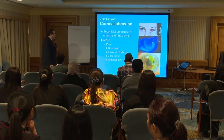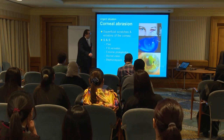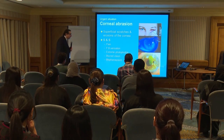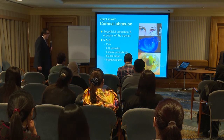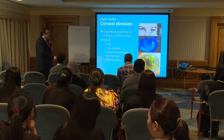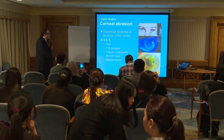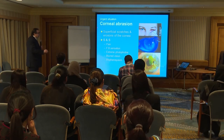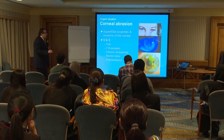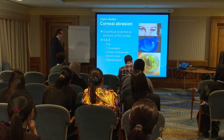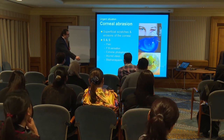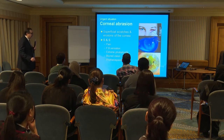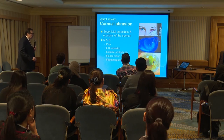Most doctors use fluorescein and the cobalt blue filter of the slit lamp to find foreign bodies. Corneal abrasions are also detected this way, as some are very small. Corneal abrasions are superficial scratches and erosion of the cornea, causing pain, foreign body sensation, extreme photophobia, blurred vision, and blepharospasm. Some patients come with very red eyes, others with only slight redness, but foreign body sensation is present and the patient cannot open the eye.